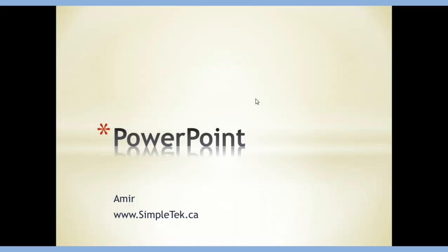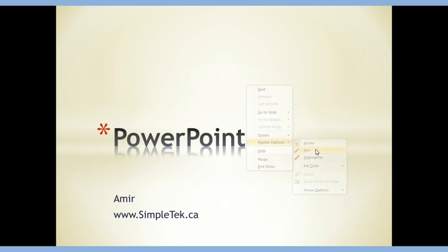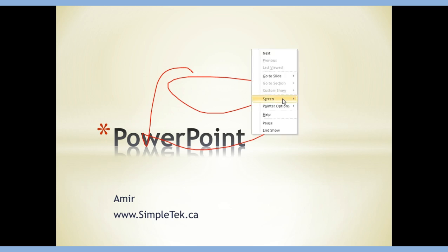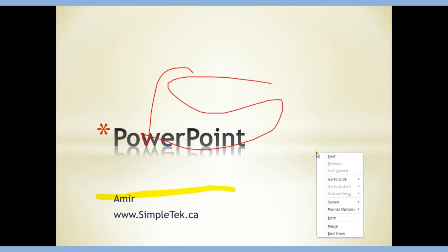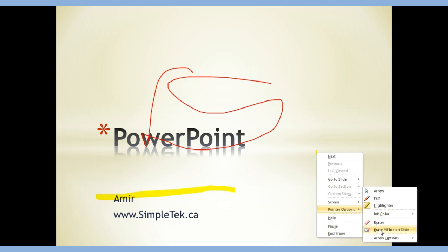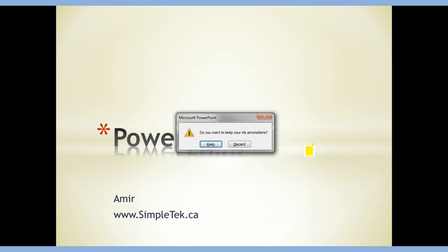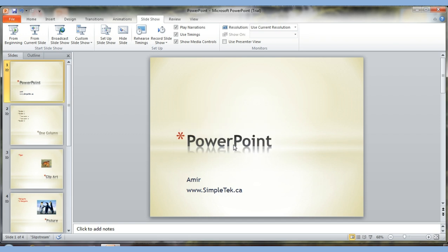During a slideshow, if you want to highlight something, right-click and go to Pointer Options. You can choose Pen to draw squiggly annotations, or choose Highlighter to highlight content. To remove the markings, right-click, go to Pointer Options, and select 'Erase All Ink on Slide.' You can also change pen colors.